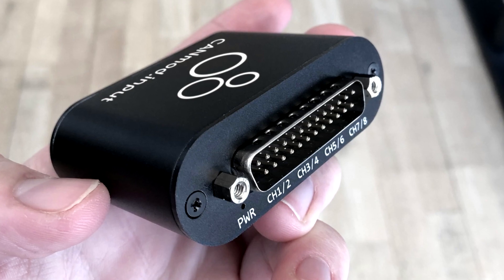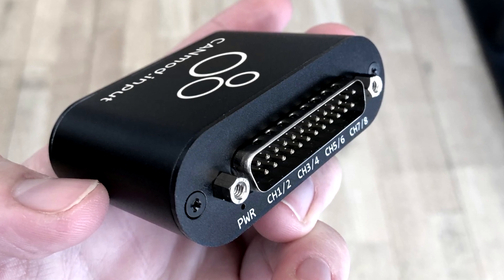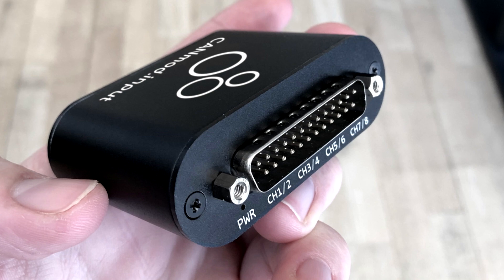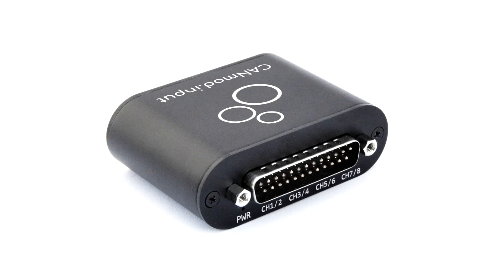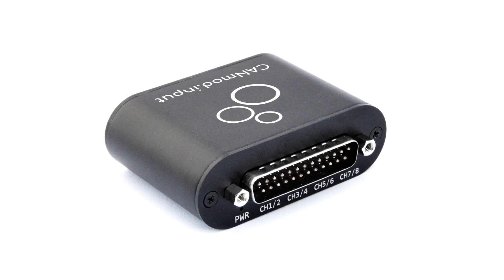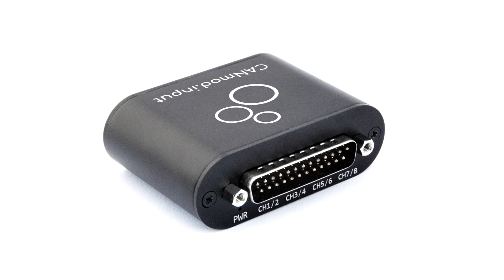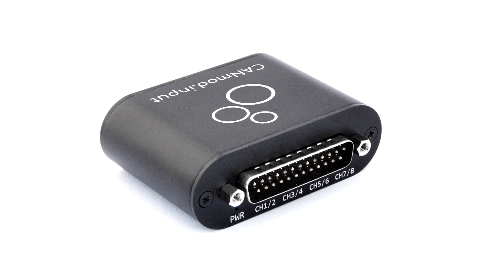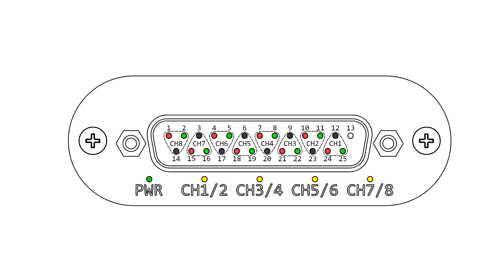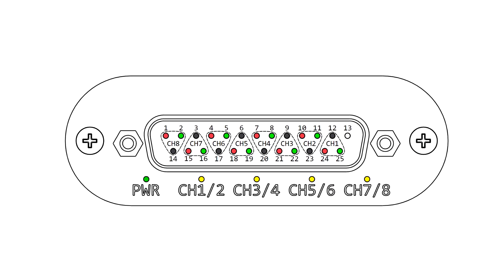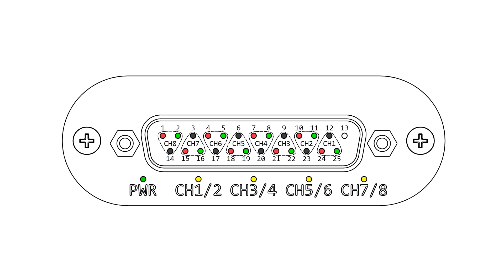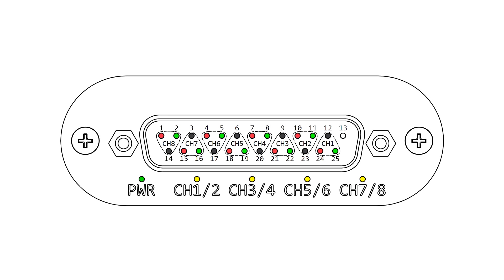Second, the module comes in an extremely compact aluminum enclosure with eight status LEDs and weighs less than 100 grams. The DB25 connector enables the connection of up to eight input sensors and also provides 3.3-volt excitation signals for driving passive sensors like potentiometers.